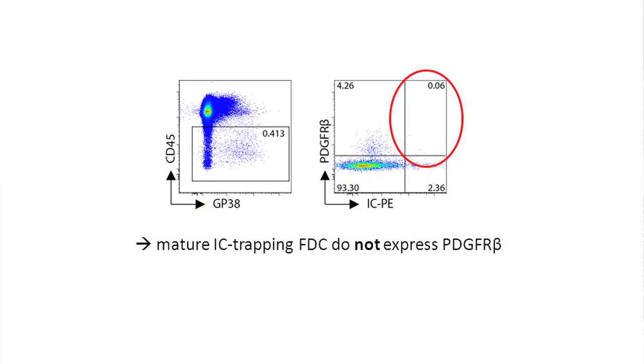One specific marker of pericytes is the beta chain of the receptor for platelet-derived growth factor, PDGFR-beta. We asked whether follicular dendritic cells are positive for PDGFR-beta. Unfortunately, that was not the case. But then we thought: maybe pericytes express PDGFR-beta, but when they mature and become follicular dendritic cells, they lose expression of this marker. This image shows that mature follicular dendritic cells are indeed negative for PDGFR-beta.